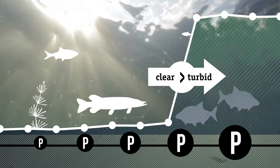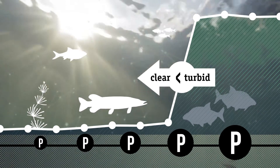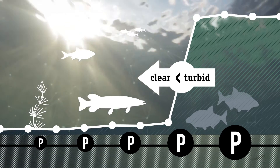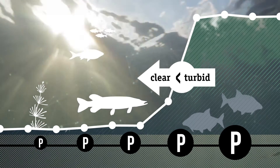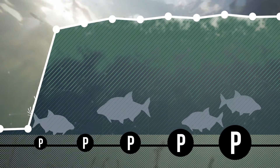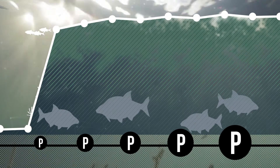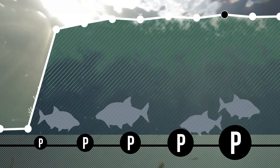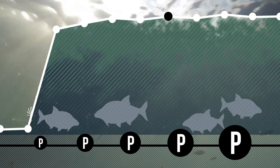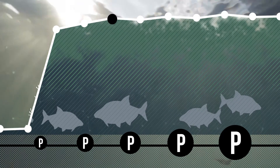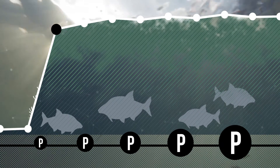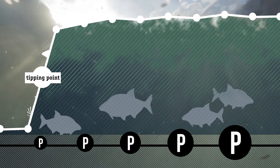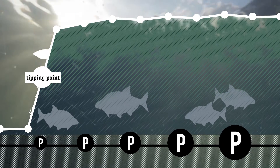This process is reversible. However, once in a turbid state, the shift back to clear water is only possible after a strong reduction in the nutrient load. So, when is this tipping point reached?